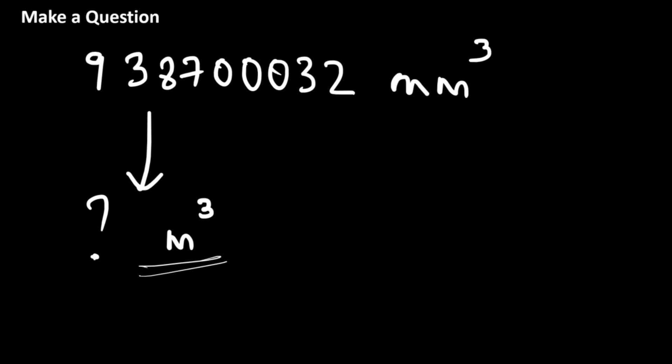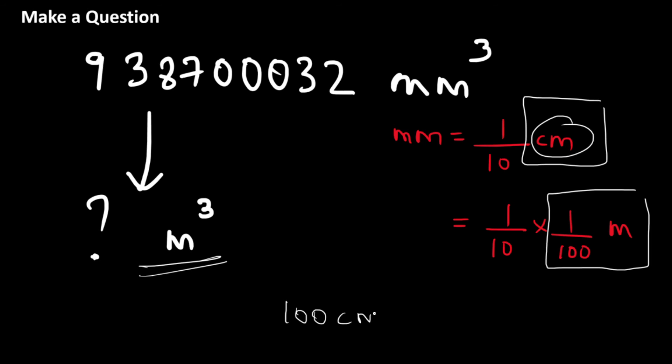So again, 1 millimeter is equal to 1 by 10 of a centimeter. We have already seen that. And let's go ahead and instead of centimeter, let's write meter. We know that 1 centimeter is equal to 1 by 100 of a meter. So for this part, I'm replacing it with 1 by 100 of a meter. It's the same logic. We have 100 centimeter is equal to 1 meter. You divide both the sides by 100 and you get 1 centimeter is equal to 1 by 100 of a meter. So that's what I'm writing over here instead of 1 centimeter.